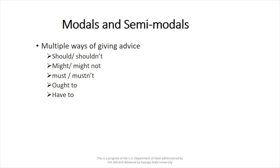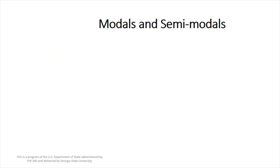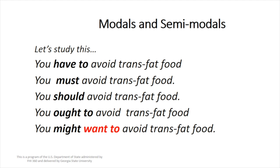Let's now move to modals and semi-modals. They offer multiple ways of giving advice. We have: should, shouldn't, might, might not, must, mustn't, ought to, have to. These expressions vary in degree of intensity, just like the verbs in the imperative. Let's look at these examples: you have to avoid trans fat food, you must avoid trans fat food, you should avoid trans fat food, you ought to avoid trans fat food, and you might want to avoid trans fat food.